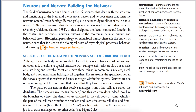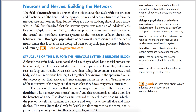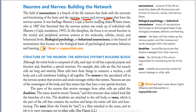Now we will read about neurons. The field of neuroscience is a branch of life science that deals with the structure and functioning of the brain, neurons, nerves, and nervous tissues. When we relate this to our behavior — because of the functioning of the brain — we refer to it as biological psychology or behavioral neuroscience.